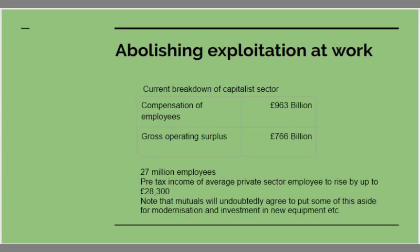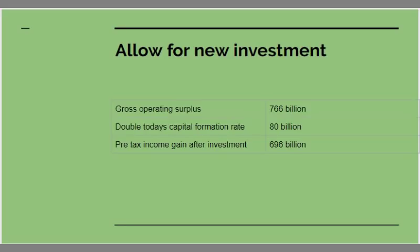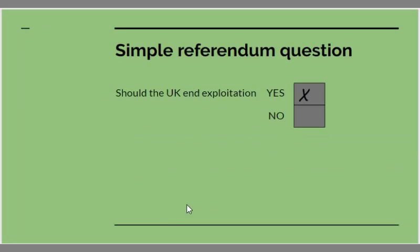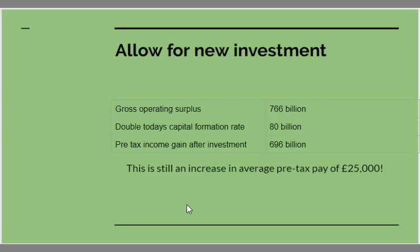If all firms were converted into mutuals — ones which paid out all their profits to their employees — the mutuals would undoubtedly have to set aside some operating surplus for modernisation and investment in new equipment. Gross capital formation in the private sector last year was £40 billion. Suppose we doubled it — invested twice as much as the private sector was currently investing. That would still leave £696 billion free of property income to be redistributed as wages — still an increase in pre-tax pay of £25,000 per employee on average.